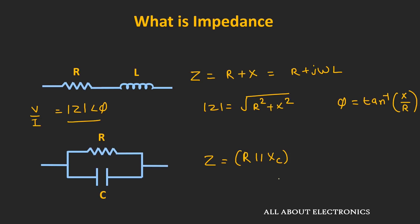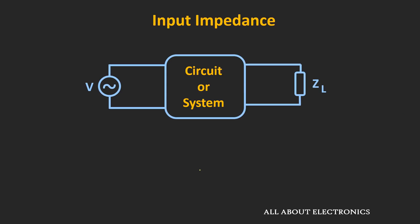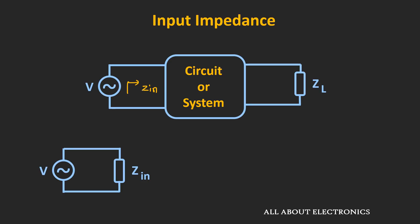Now that we understand impedance, let's understand about input and output impedance. Let's say we have one circuit and some voltage source V is connected at the input terminals. If we see this circuit from the source's perspective, then the impedance offered by the circuit is known as the input impedance. If we see the equivalent circuit from the source's perspective, this input impedance is the impedance observed by the voltage source between the two terminals of the circuit.